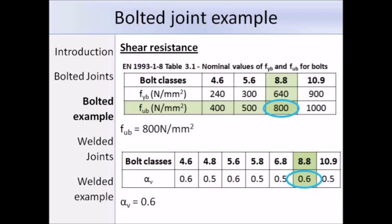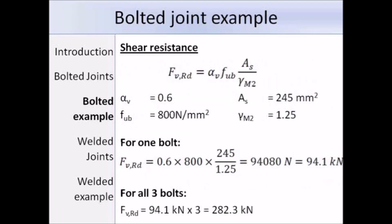We also need the values of Fub and alpha V. Fub is the ultimate tensile stress of the bolt, obtained from Table 3.1 in EN 1993 Part 1-8; for bolt class 8.8, Fub is equal to 800 N/mm². To determine alpha V we refer to Table 3.4; for bolt class 8.8, alpha V is equal to 0.6. Substituting all values into the equation, for one bolt the shear resistance works out as 94.1 kN. With three bolts, multiplying by 3 gives 282.3 kN as the shear resistance for all three bolts.